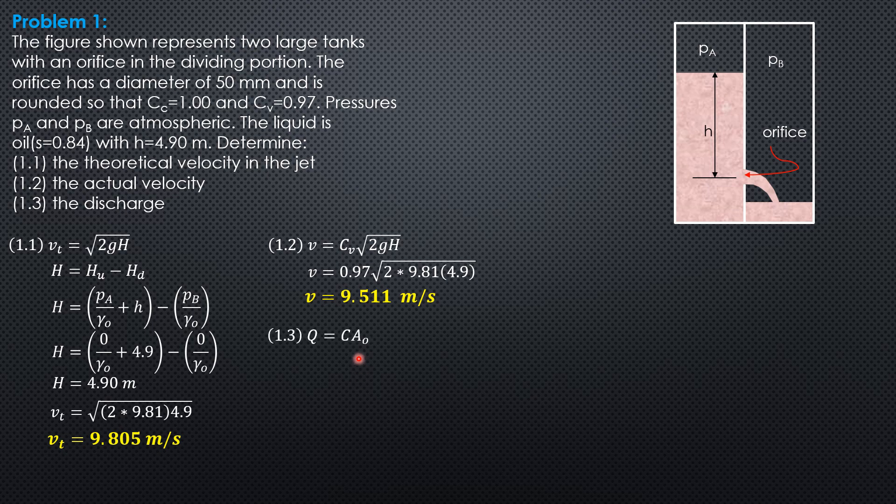Then the discharge is Q equals CA square root 2gH, where C, coefficient of discharge, is the product of coefficient of contraction and coefficient of velocity. So 1.0 times 0.97 pi times 0.025 square,